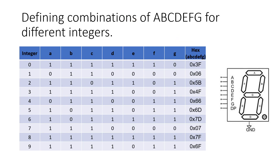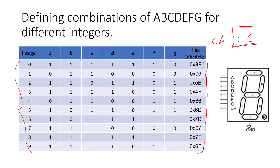As discussed in the previous video, there are specific combinations of segments A through G for each integer value to be displayed on the seven-segment display. There are two types: common anode and common cathode. In embedded practice, we prefer common cathode, where the grounds of all LEDs share a common ground and all LED inputs are brought out from the seven-segment.